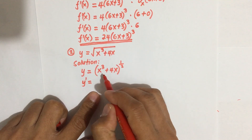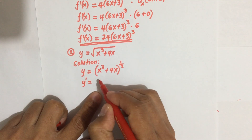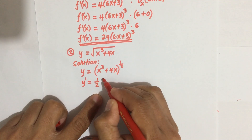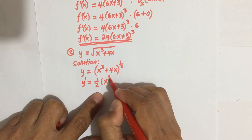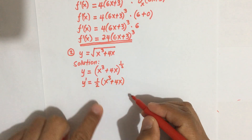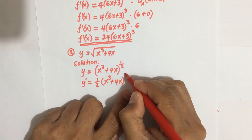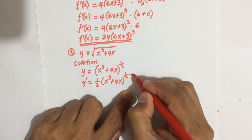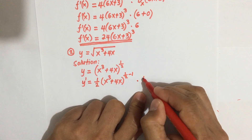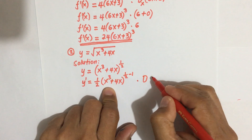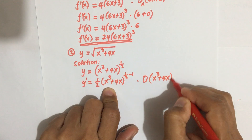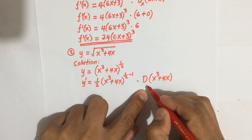Following the General Power Rule, we bring down the one half, then write x cubed plus 4x raised to the power one half minus 1, times the derivative of u, which is x cubed plus 4x, with respect to x. One half minus 1 equals negative one half, since the LCD is 2: 1 minus 2 over 2 gives negative one half.